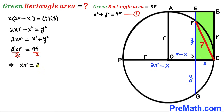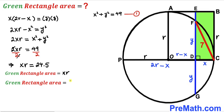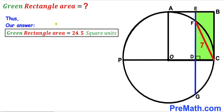Recalling that the green rectangle area equals x times r, and our x times r value is 24.5, the area of the green rectangle is 24.5 square units. That is our final answer. Thanks for watching, and please don't forget to subscribe to my channel for more exciting videos.